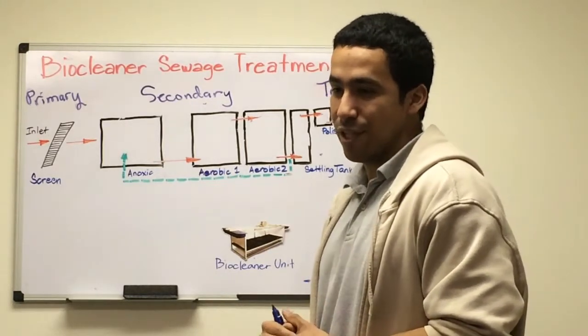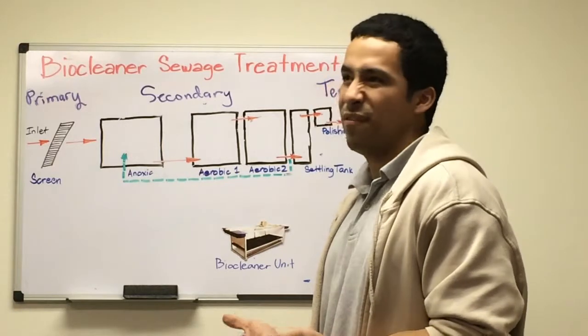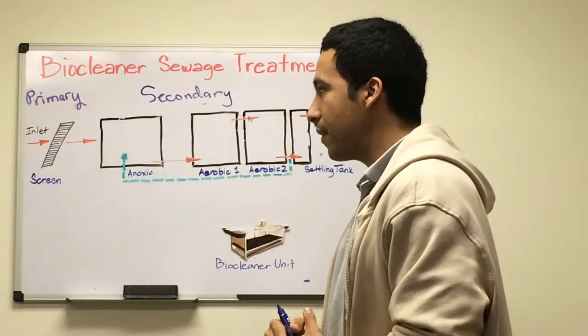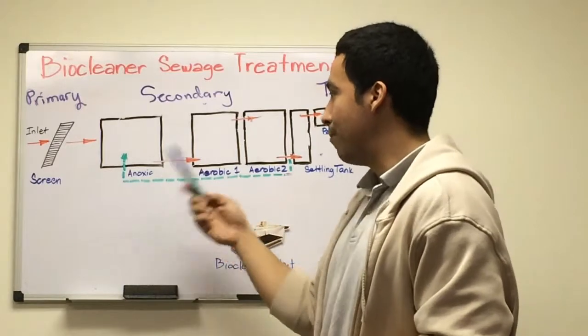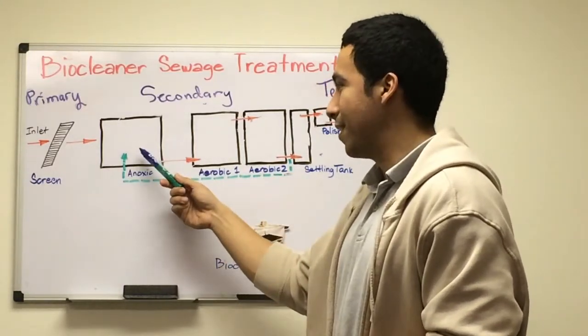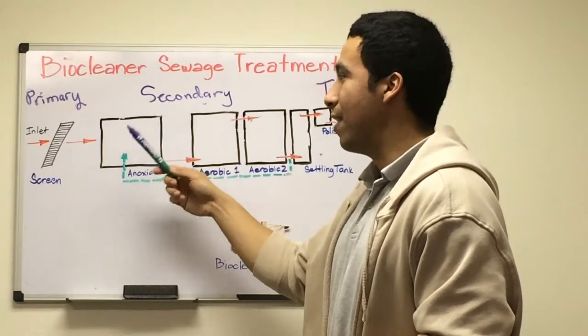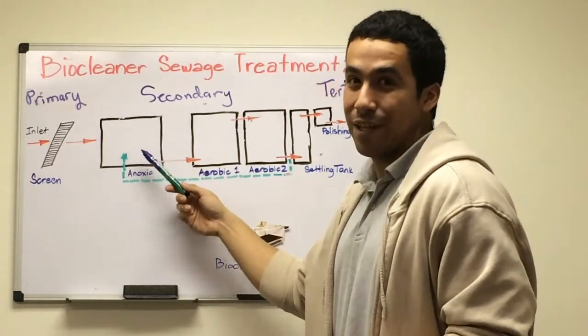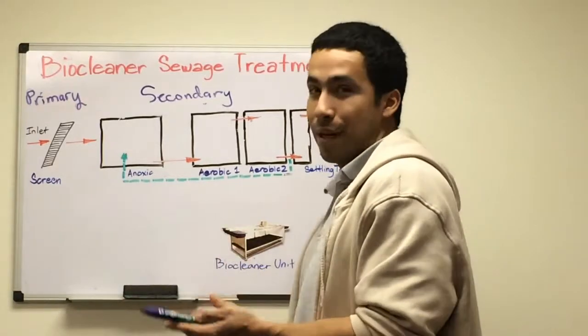In addition, we dose microbes from the last aeration pond or aeration tank to the anoxic tank. The microbes here are facultative, so our microbes become anaerobic. These anaerobic microbes are what break down the BOD loading and we eliminate the foul odor.